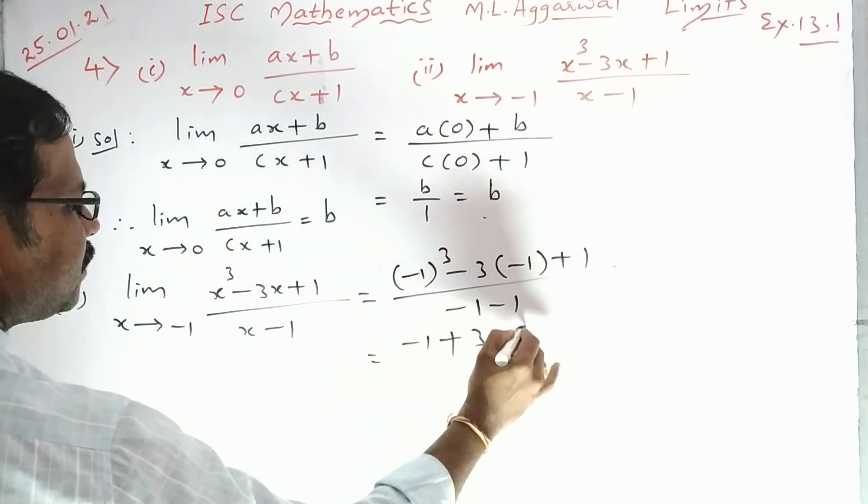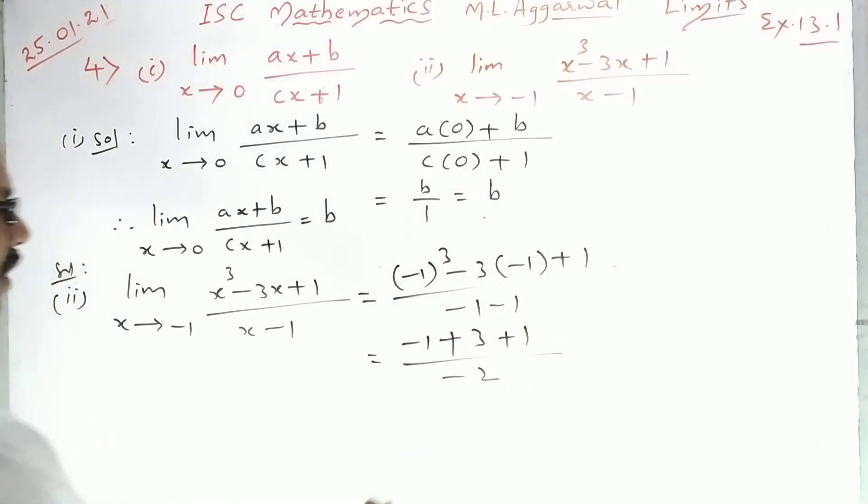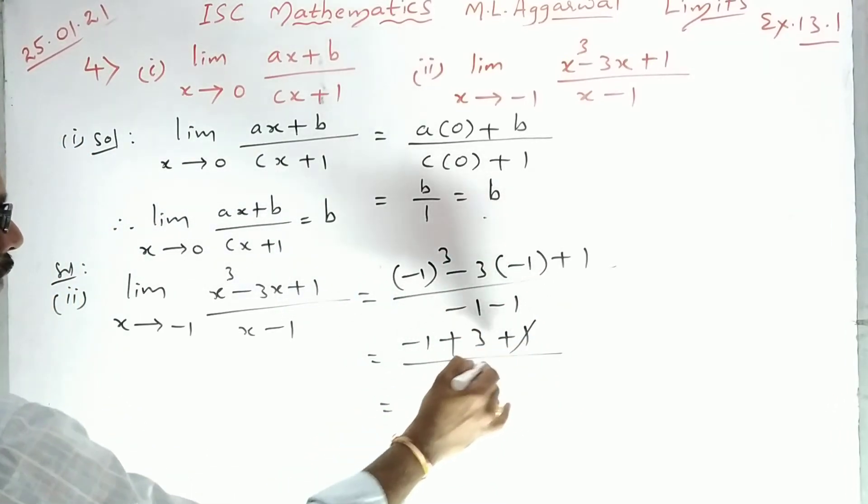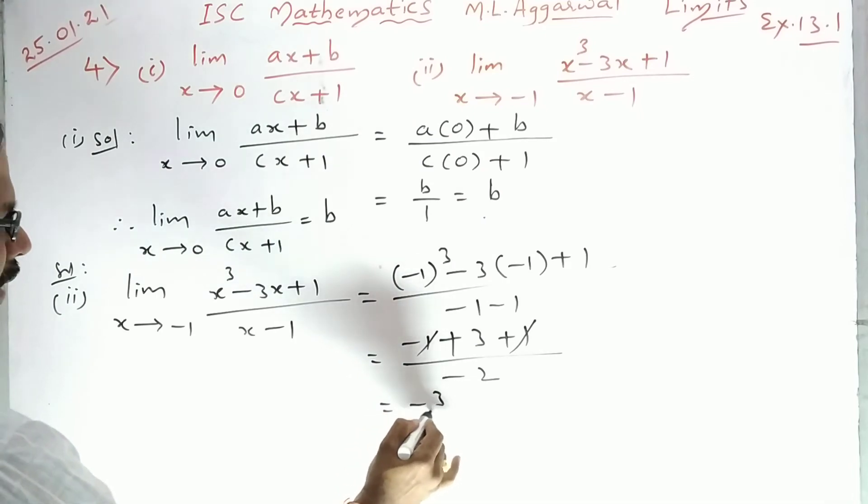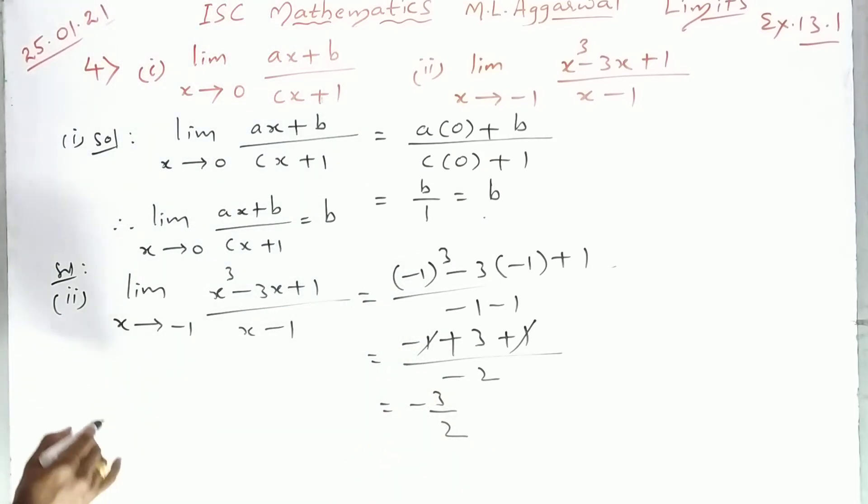So plus 1 minus 1 gets cancelled. The answer is -3 by 2. Therefore, limit x tends to minus 1 of (x³-3x+1)/(x-1) equals -3/2.